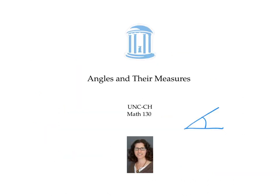Converting between different ways of measuring angles is all about unit conversion. To convert between radians and degrees, we use the fact that pi radians corresponds to 180 degrees. To convert between minutes and seconds and degrees, we use the fact that 60 minutes corresponds to one degree, and 60 seconds corresponds to one minute.